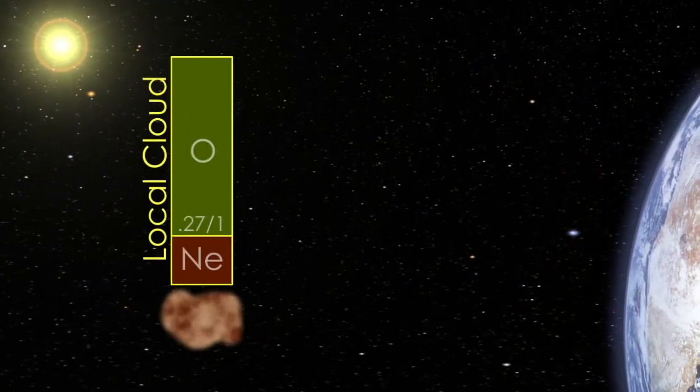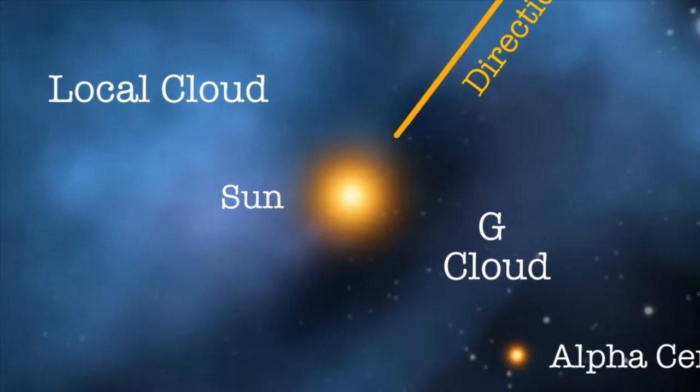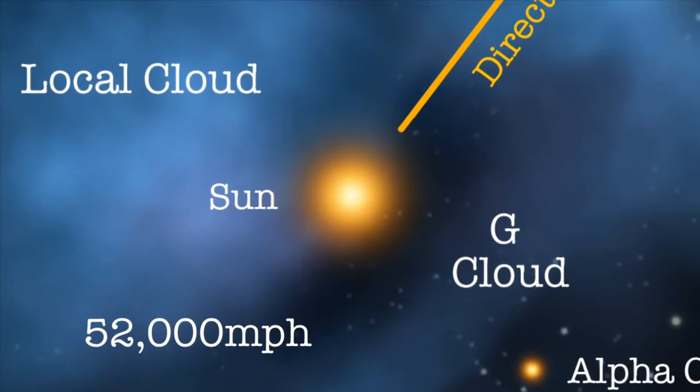Surprisingly, it turns out that the local interstellar material is different from the Sun, and the wind is slower and coming from a different direction than previously thought.